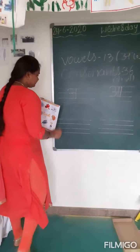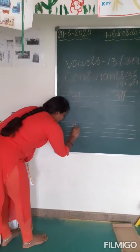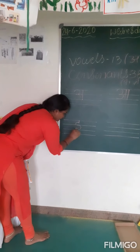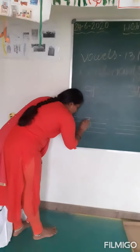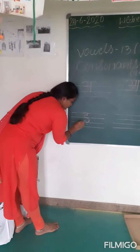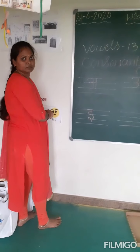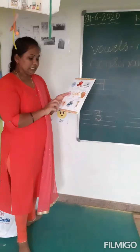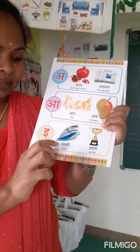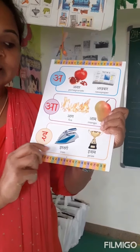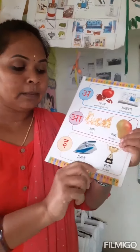The next letter is I. First, write S and put a small knot below. You have to write S and put a small knot below — that gives us I. I say — it means iron. I — it means price.